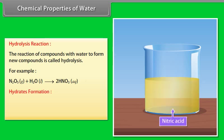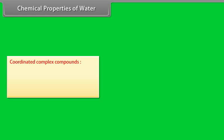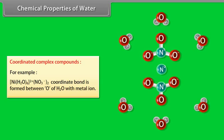Hydrates formation: Water forms hydrates with metal salts. There are three main types. Coordinated complex compounds, for example, nickel-2-nitrate hexahydrate. Coordinate bond is formed between O of H2O with metal iron.